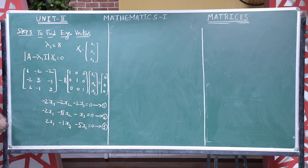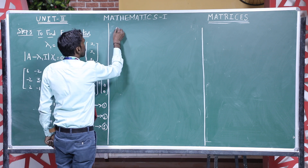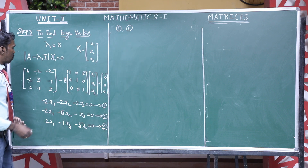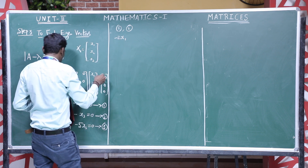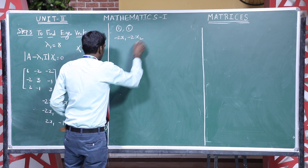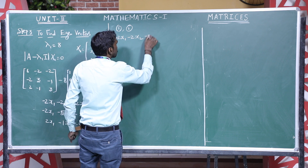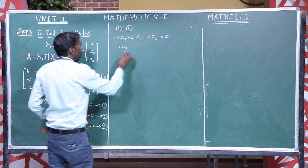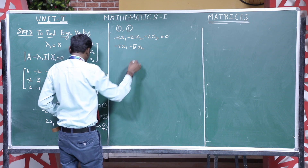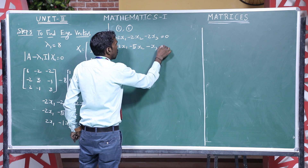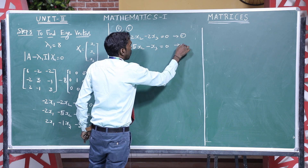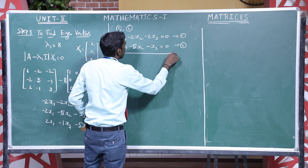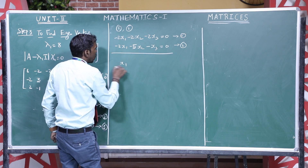I have to simplify any two equations to get the eigenvector. I can take equations 1 and 2. Equation 1: minus 2·X1 minus 2·X2 minus 2·X3 = 0. Equation 2: minus 2·X1 minus 5·X2 minus X3 = 0. Since these are different equations, we can solve by the cross-multiplication method.